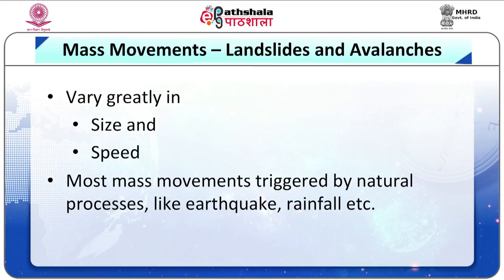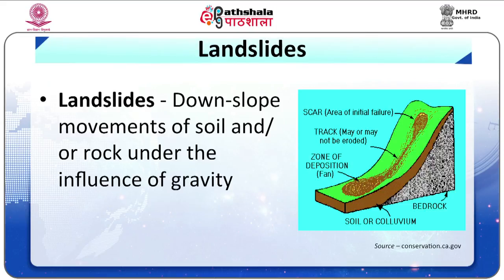Most mass movements are triggered by natural processes such as an earthquake, intense or prolonged rainfall, or rapid snow melt. However, some of the most damaging landslides occur in materials formed by human activity such as mining waste and garbage heaps. People often play a key role in the creation and triggering of mass movements.